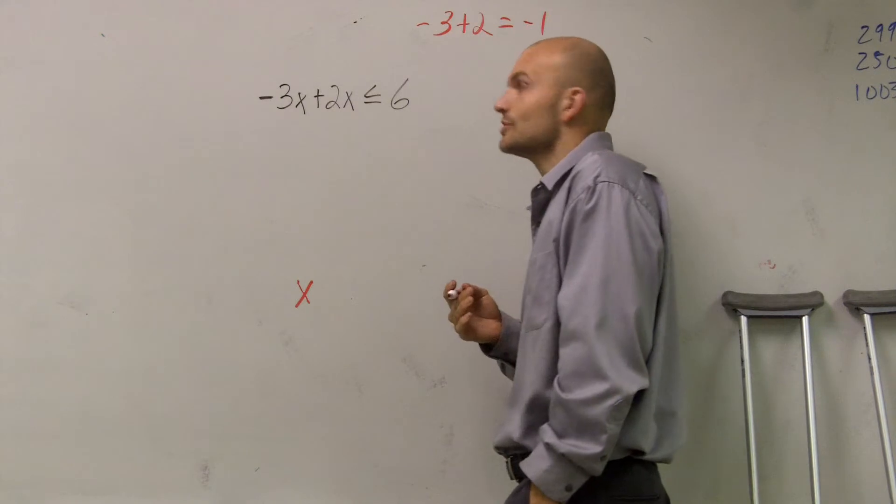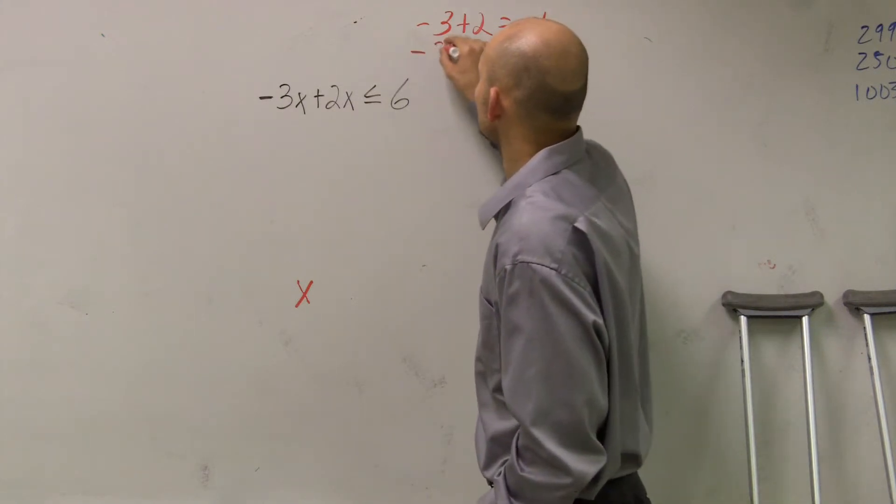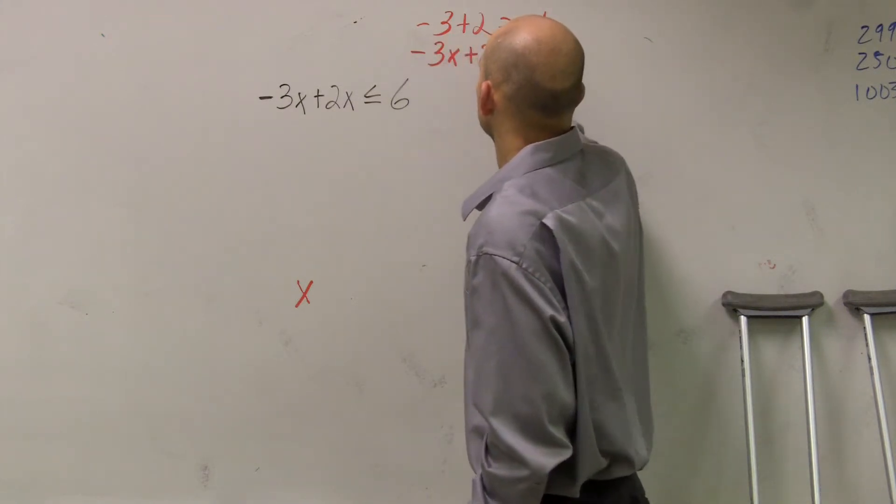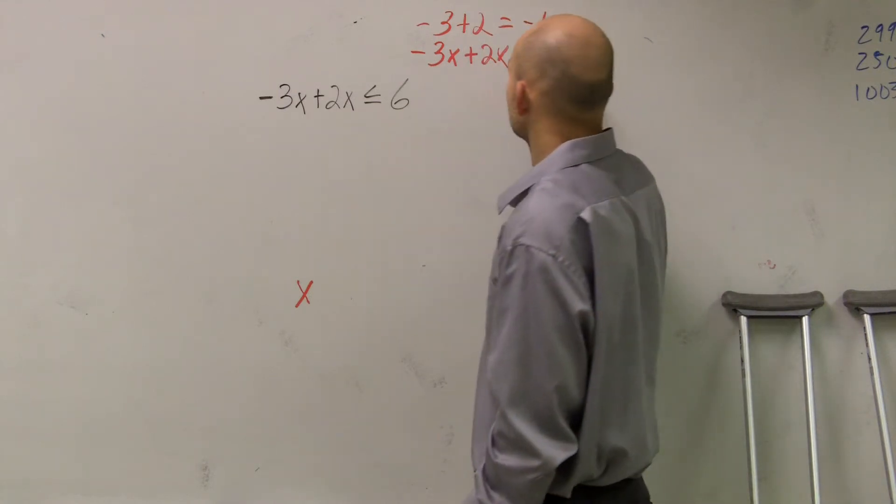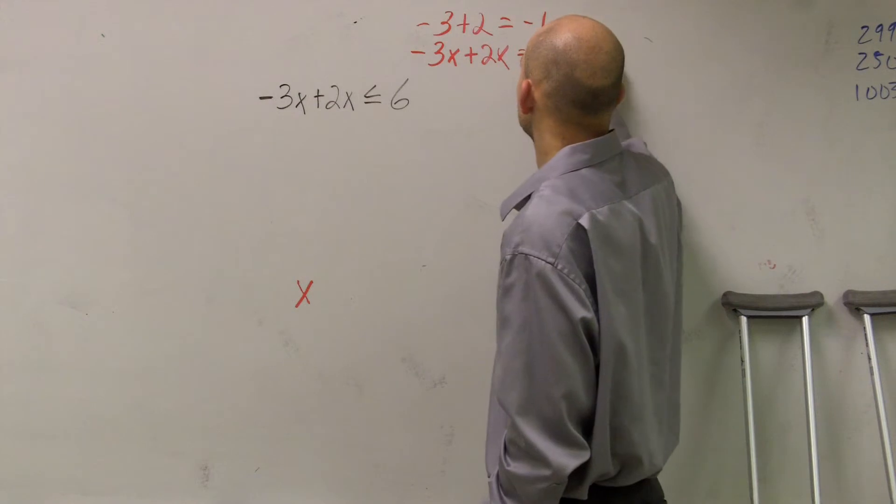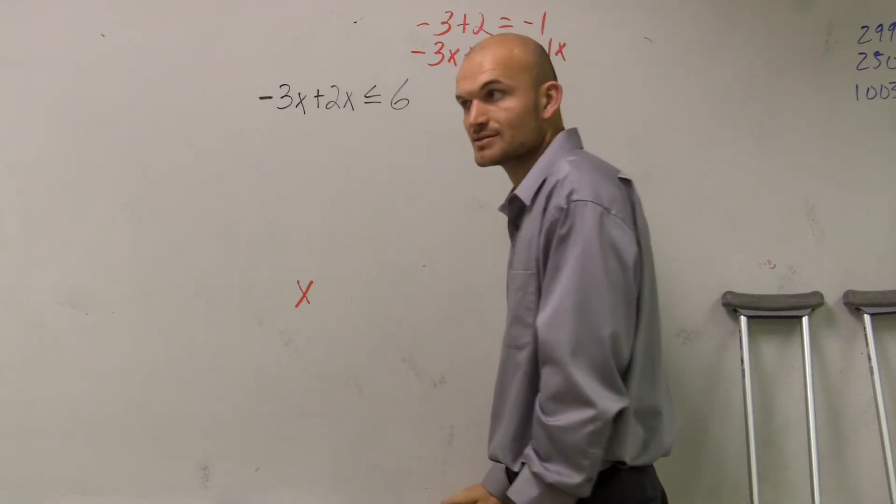Now remember, when we were combining like terms, if I said like negative 3x plus 2x all by itself, you guys understood that these are grouping terms. Well, this is going to equal negative 1x or just negative x.